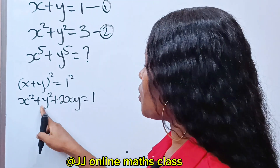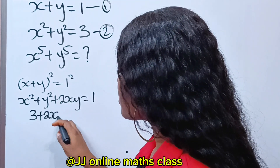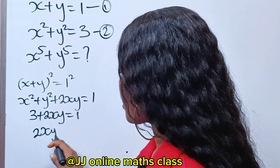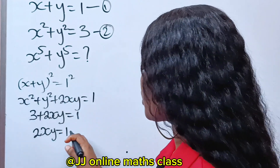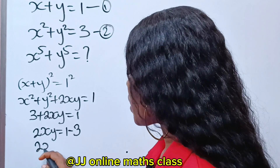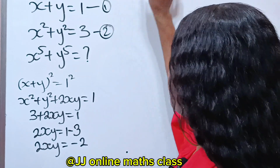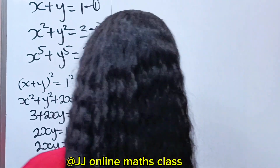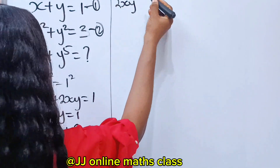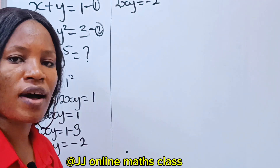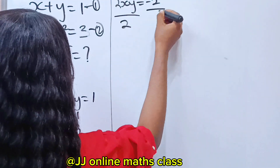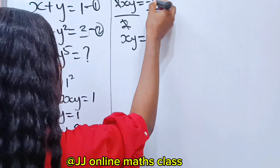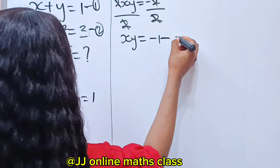So we are going to replace x squared plus y squared with 3: 3 plus 2xy is equal to 1. So 2xy is equal to 1 minus 3, which means 2xy is equal to minus 2. To get the value of xy, we divide both sides by 2, giving us xy is equal to minus 1. Let's call this equation 3.